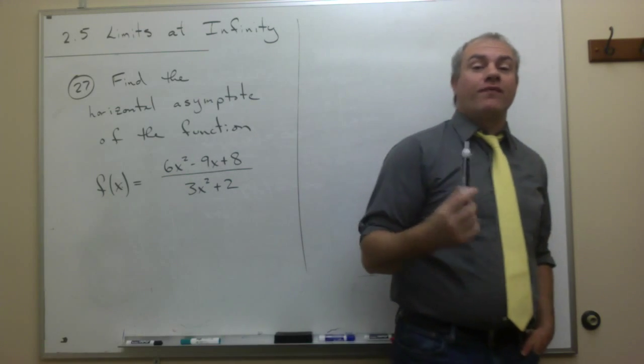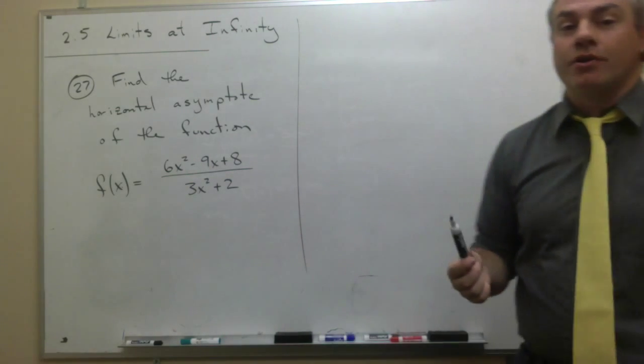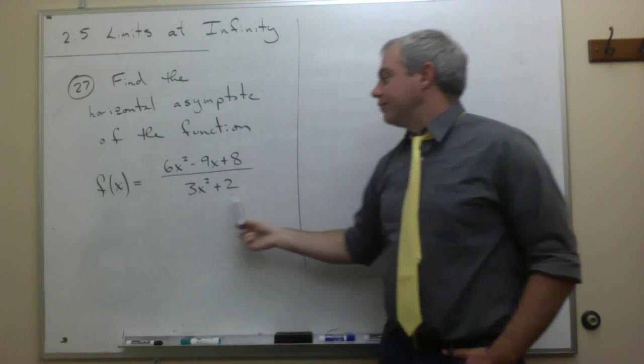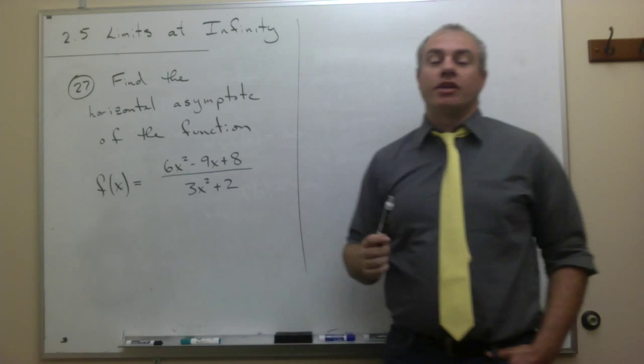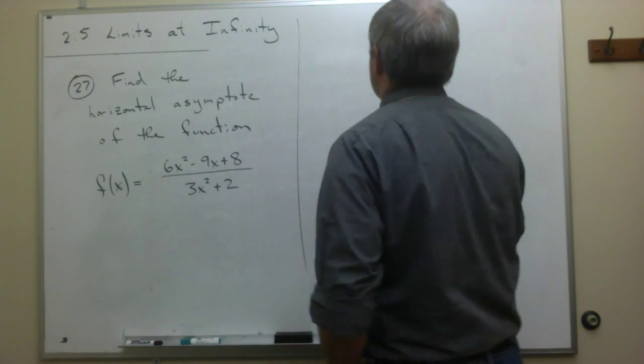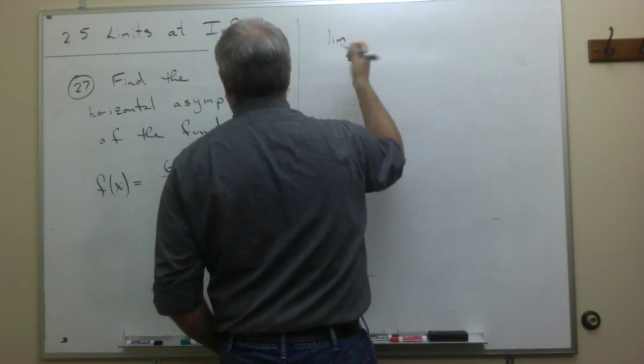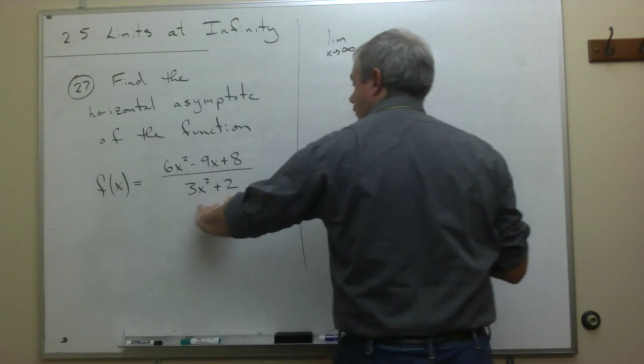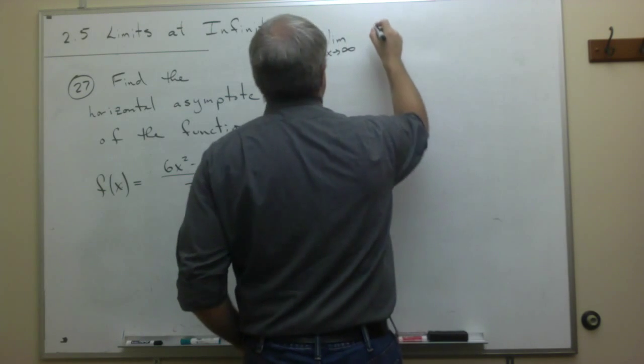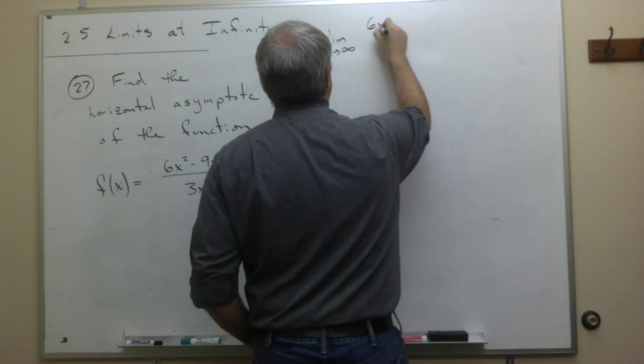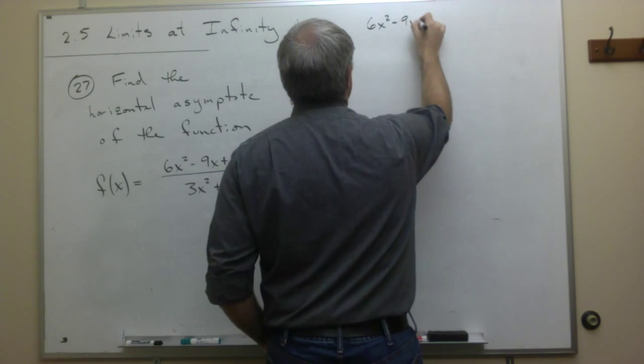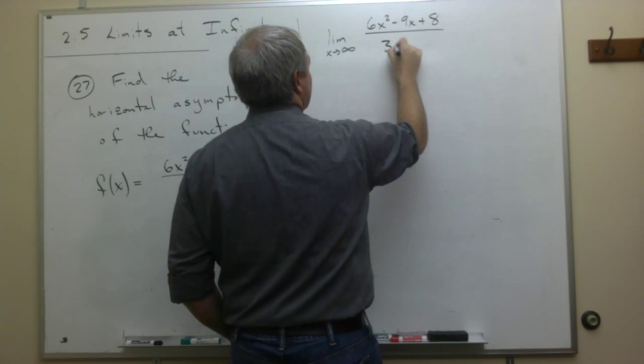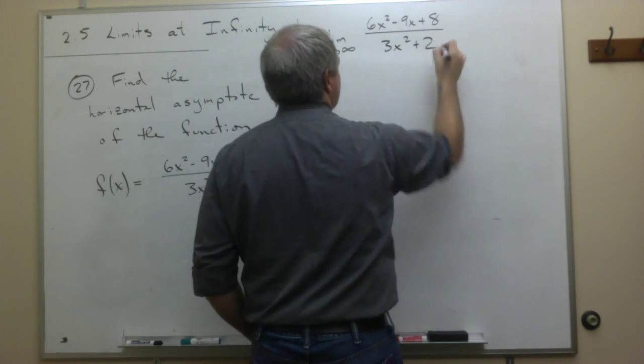And as we know, the way that we find a horizontal asymptote is we want to take the limit as x goes to infinity of this rational function. So let's write that down first. We know we're looking for the limit as x goes to infinity of this rational function. That's 6x squared minus 9x plus 8 divided by 3x squared plus 2.